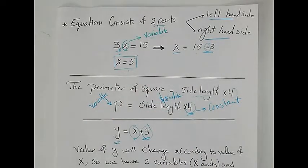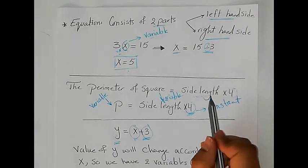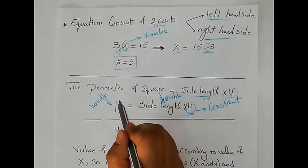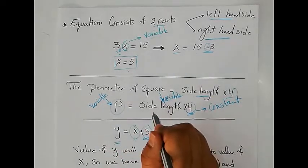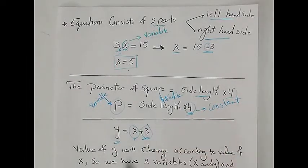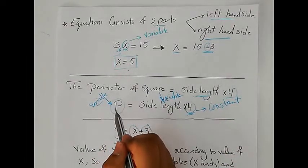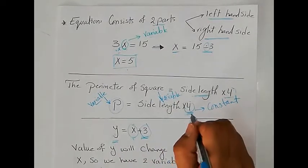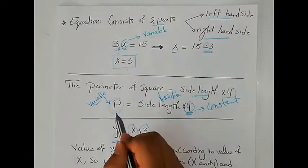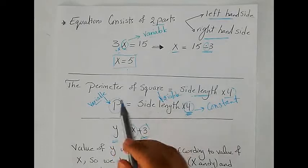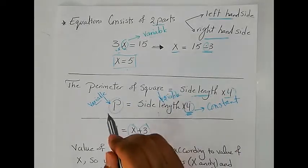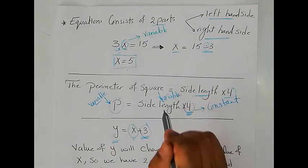Now let's have an example with two variables. As you know, the perimeter of a square equals the side length multiplied by 4. So if the perimeter is P and the side length is S, then P equals side length times 4. Here we have two variables — perimeter and side length — and one constant, which is 4. The value of the perimeter will change according to the value of the side length.